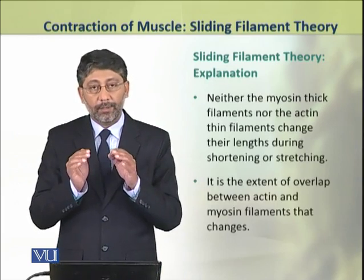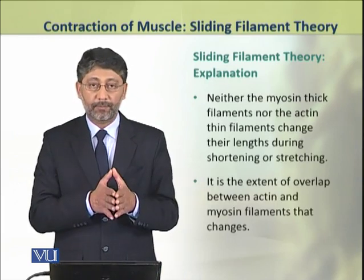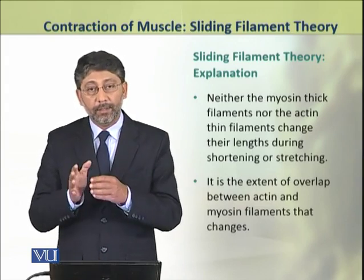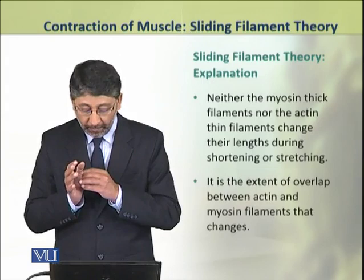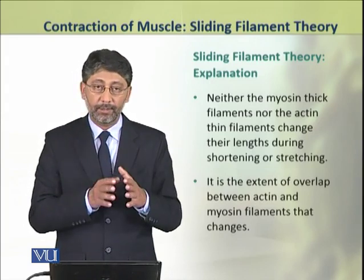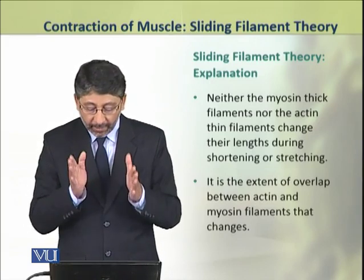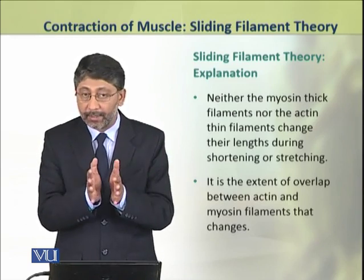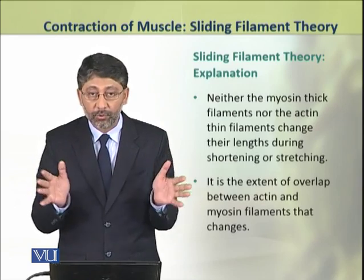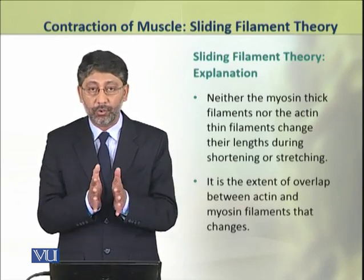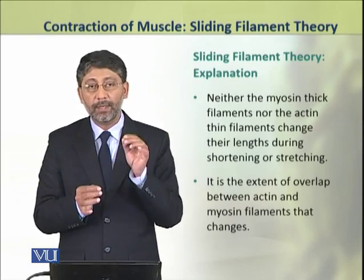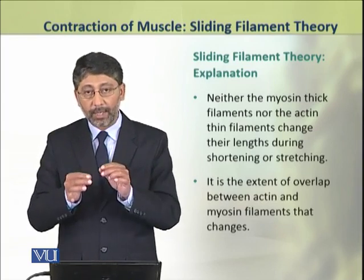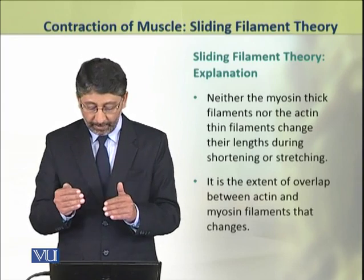In all of this process, neither the myosin thick fibers nor the actin thin fibers actually reduce or become shorter in their lengths. It is actually the overlap between the actin and myosin filaments that changes in the sarcomere.